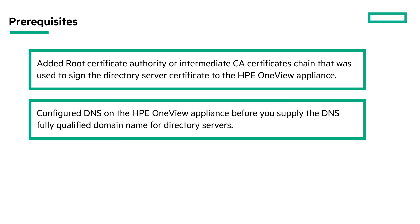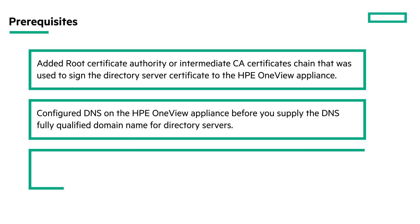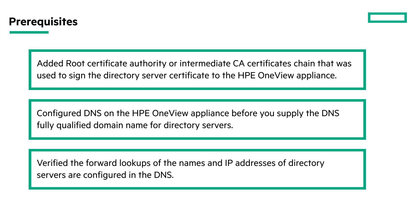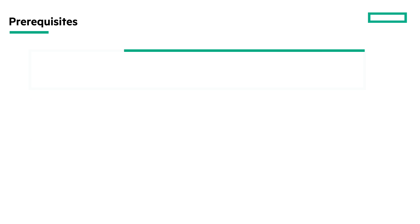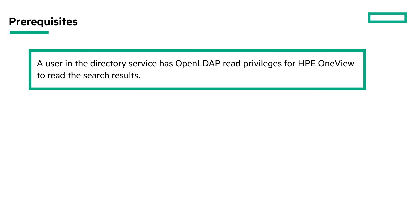Configure DNS on the HPE OneView appliance before you supply the DNS fully qualified domain for directory servers. Verify that forward lookups of the names and IP addresses of directory servers are configured in the DNS. If you want to configure an OpenLDAP directory, ensure that a user in the directory service has OpenLDAP read privileges for HPE OneView to read the search results.